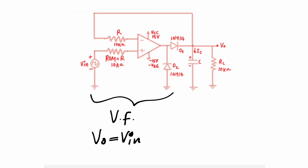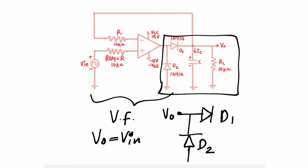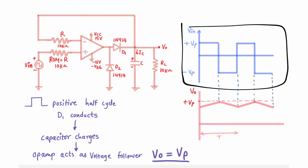This left side part is just a voltage follower, so the op-amp follows input and Vo equals Vin. Now this right side circuit is important. There is a load resistor, and the main components are D1, D2, and C — two diodes and one capacitor. Just know the orientation: D2 is connected in reverse and D1 is connected in forward.